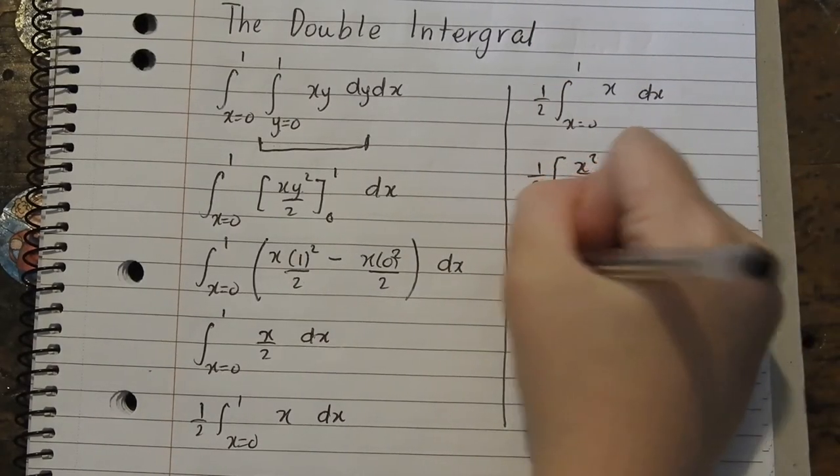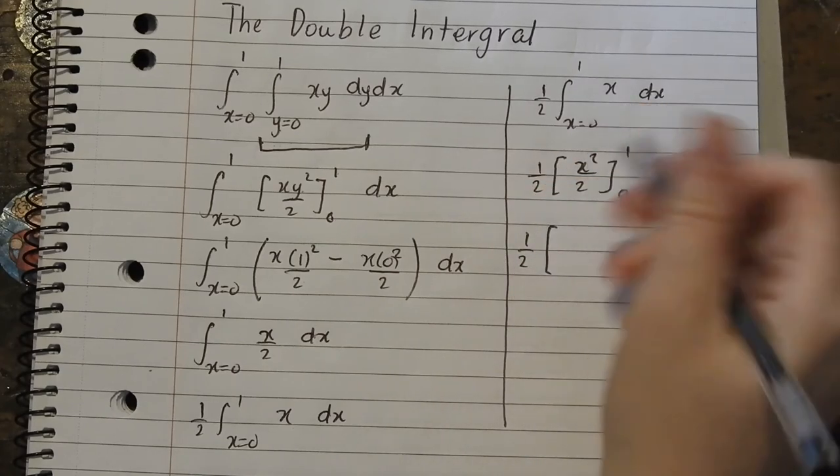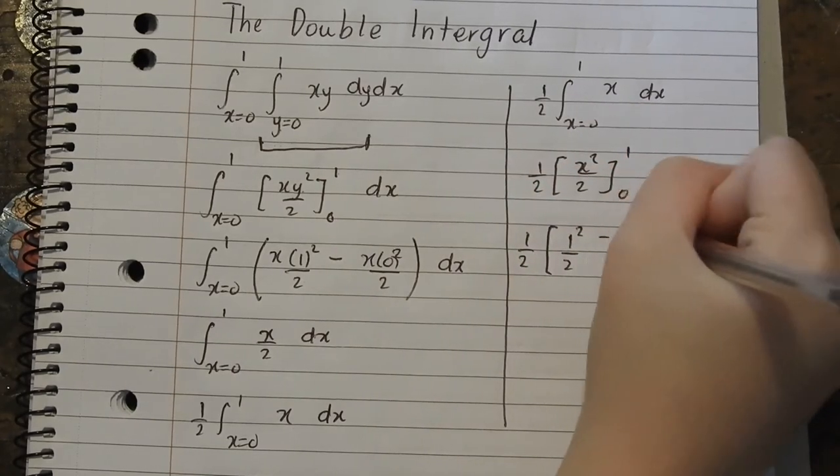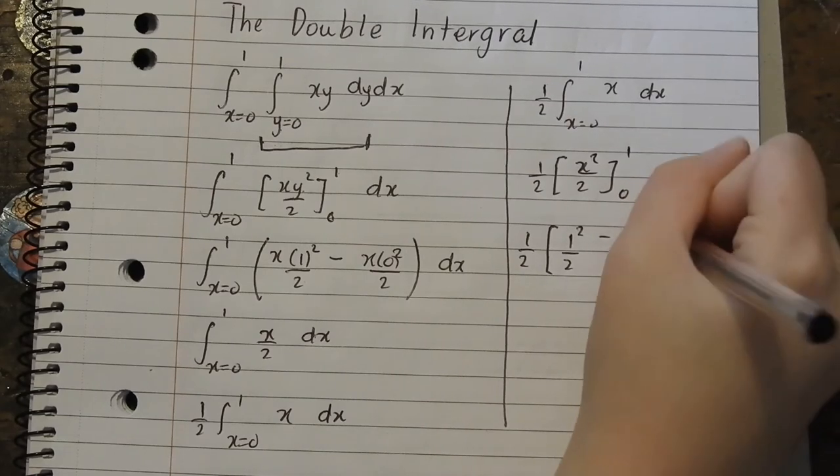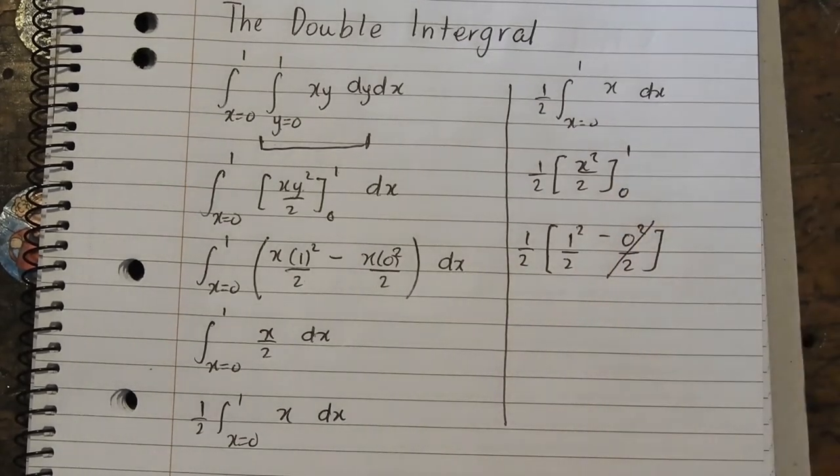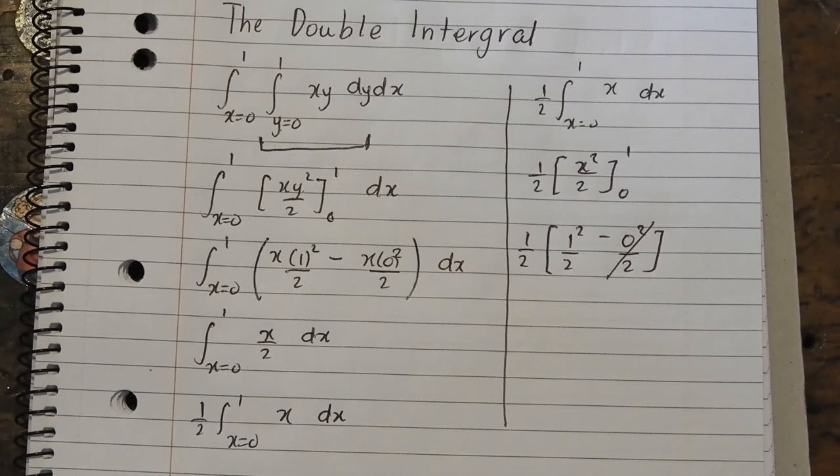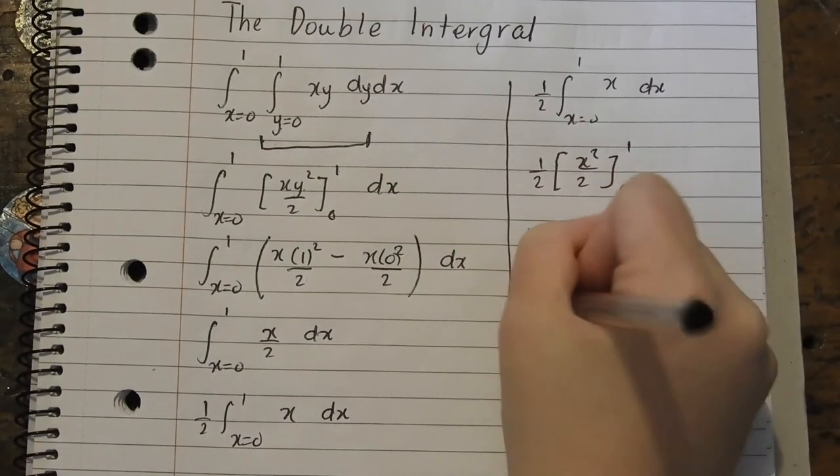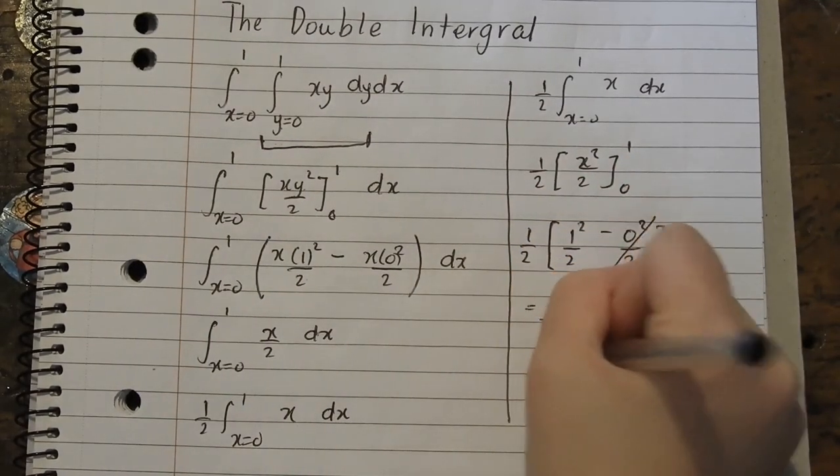So we've got half out the front. Now let's substitute these values in 1 squared on 2 minus 0 squared on 2. That's gone because it's times by 0, so it doesn't mean anything. So we've got half times a half, which is a fourth.